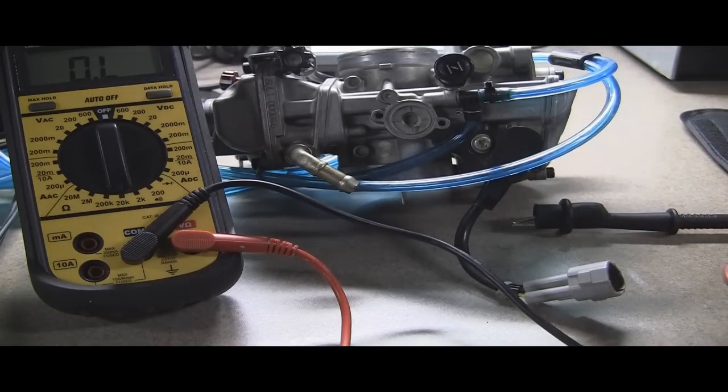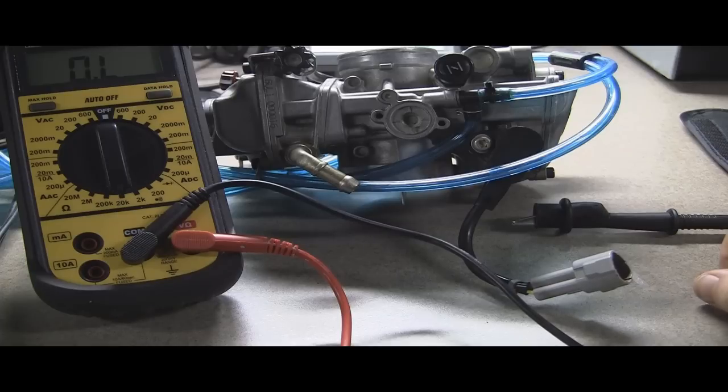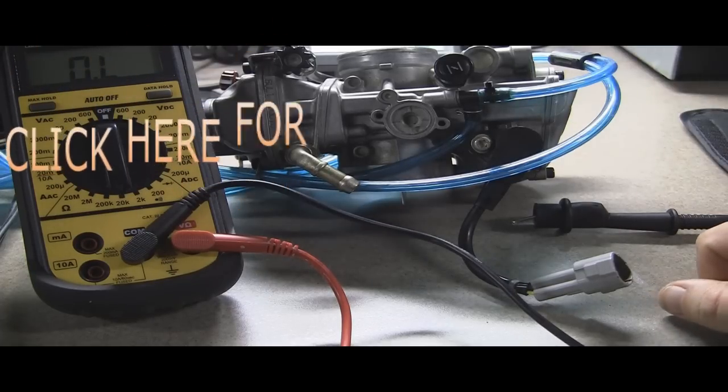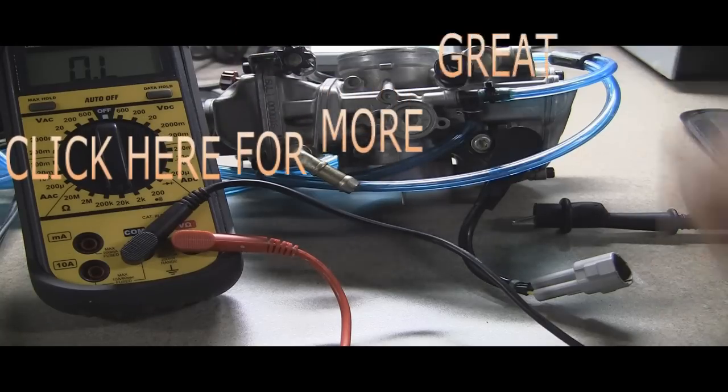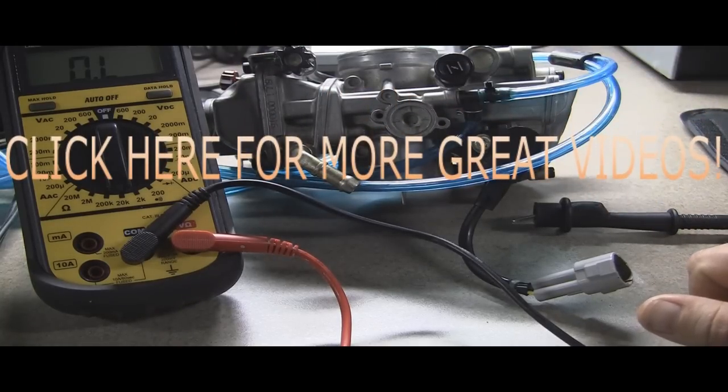So this is a quick and easy way, assuming you have a multimeter, to check to see if the throttle position sensor is bad or good. There you have it. Please feel free to post any questions or comments and rate the video. That's it. Thanks for watching.